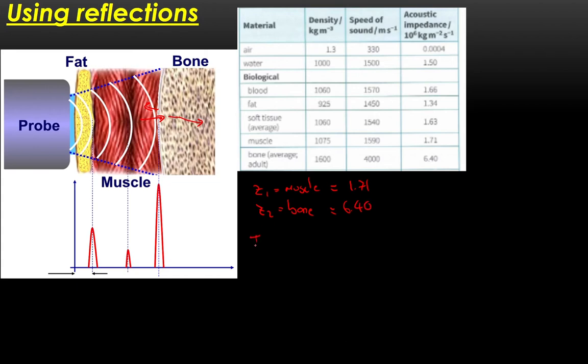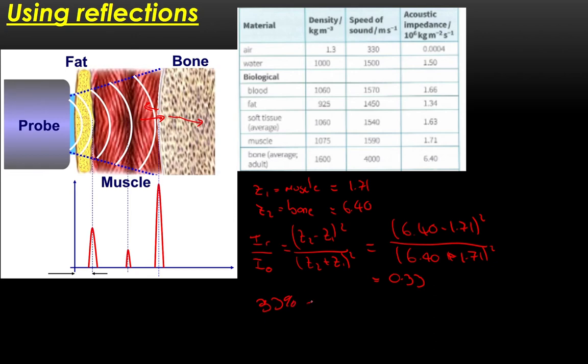So remember we are using the equation the ratio of reflected to incident intensity is Z2 take away Z1 all squared over Z2 plus Z1 all squared. So that gives me 6.40 take away 1.71 all squared divided by 6.40 plus 1.71 all squared and that comes out as 0.33. So that's the fraction so I can say that 33 percent of the sound is reflected.